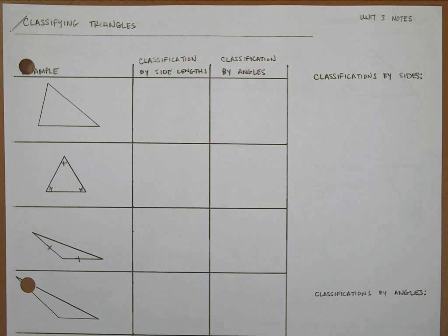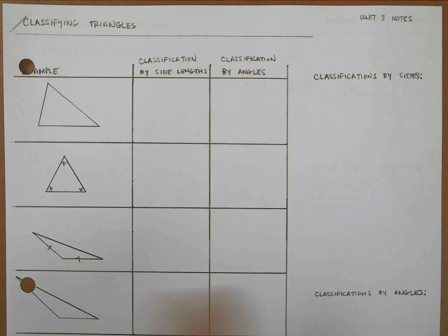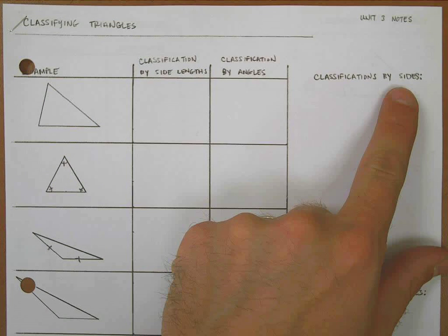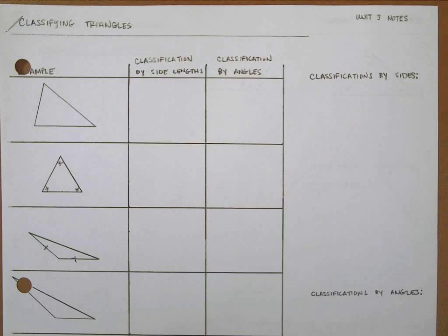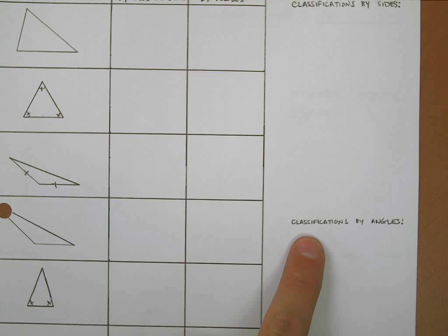In this video we're going to be talking about classifying triangles. There are two different ways that we can classify triangles: we can either classify them by their side length, or we can classify them by the angles that are inside the triangle — the interior angles.